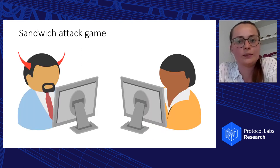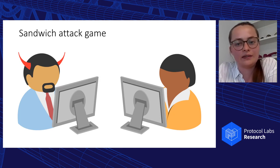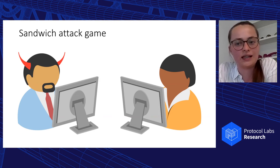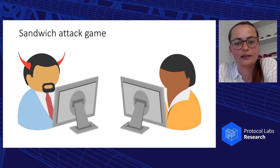We studied sandwich attacks and the possibility to avoid them by considering both the incentives of the attacker and those of the victim — what we refer to as the sandwich attack game. While the attacker's incentive is to maximize profit, the victim's incentives are to avoid both sandwich attacks and unnecessary transaction failures. The victim tries to achieve this by setting the slippage tolerance. Most decentralized exchanges suggest a standard auto slippage tolerance, and we want to set the slippage on the victim side to outperform that constant auto slippage.